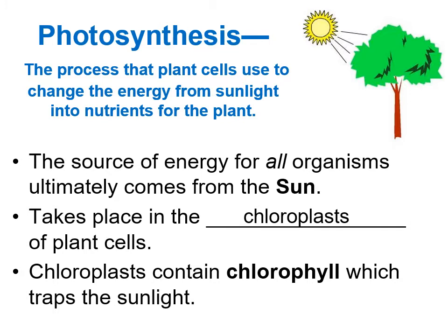Photosynthesis takes place in the chloroplasts of plant cells. Chloroplasts contain chlorophyll, which traps the sunlight. Chlorophyll is a pigment — it is a green pigment — and that is why most plants are green. That green pigment helps trap sunlight to start the process of photosynthesis.